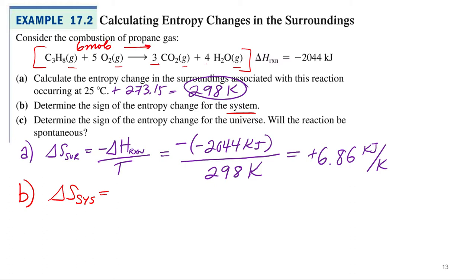3 plus 4 is 7. So we're going from 6 moles to 7 moles. So what's going on with our entropy? Is it increasing or decreasing? Increasing. So what's going to be the change in entropy sign? Positive. So I don't know what it is yet, but it is going to be positive.